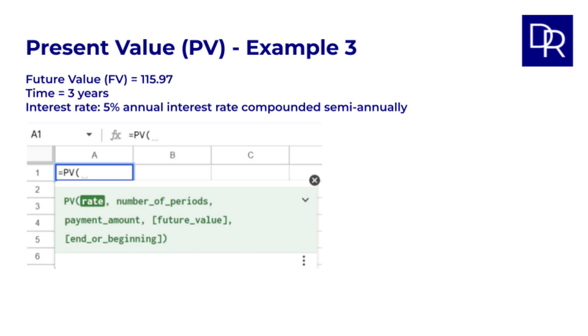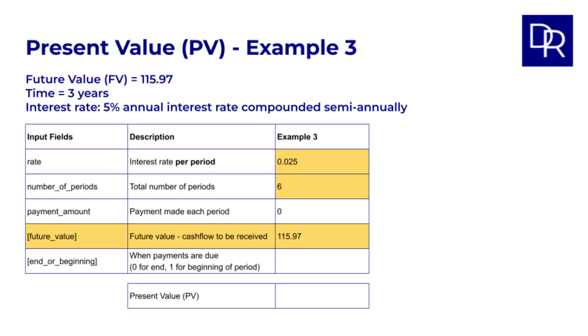What's the value of that future cash flow today? Let's see how we can find this using the PV function in Google Sheets. Type equals PV open bracket and we see a very similar list of inputs to what we saw for FV. The only difference is that now future value is an input. Note it's optional as you could for example have non-zero payments and a zero FV. Here we can use all the same values as in example 2, except instead of a PV of negative 100, put in FV of positive 115.97. So, equals PV 0.025, 6, 0, 115.97 gives us negative 100.